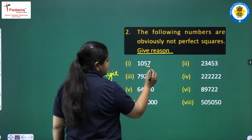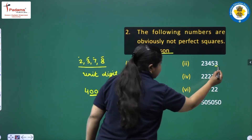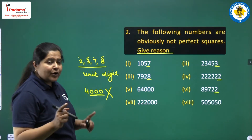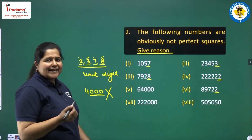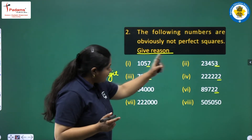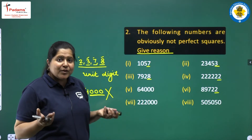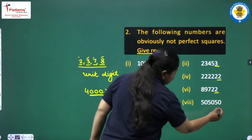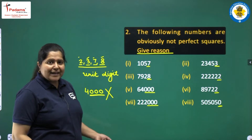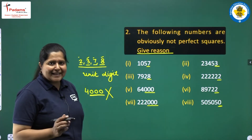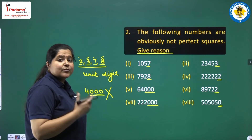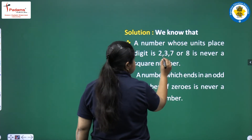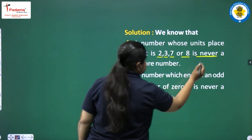Looking at the given numbers: one ends in 7, one ends in 8, one has 3, one ends in 2, another ends in 2. These are all numbers where the units digit is 2, 3, 7, or 8. We know that a number whose units place digit is 2, 3, 7, or 8 is never a square number.